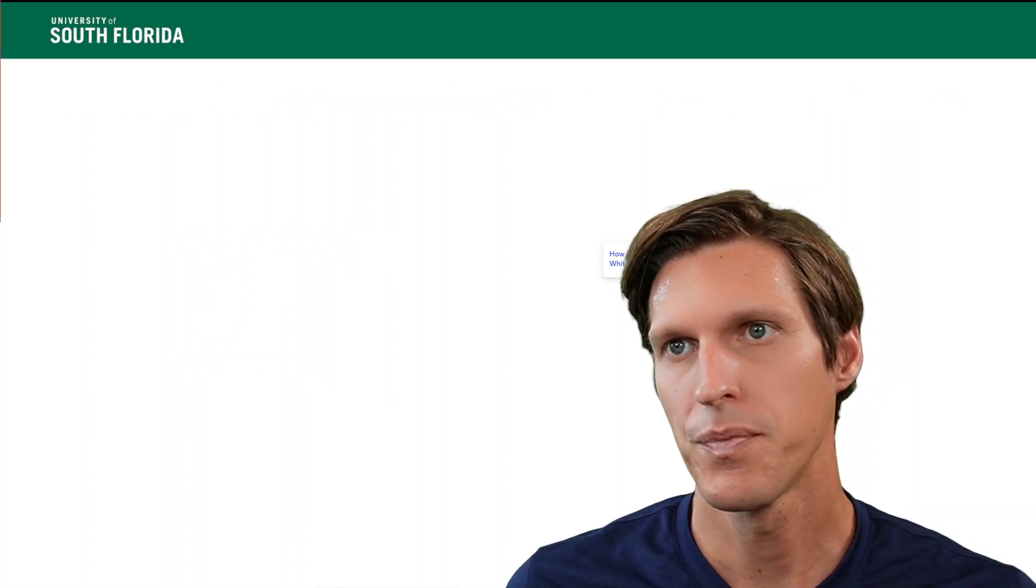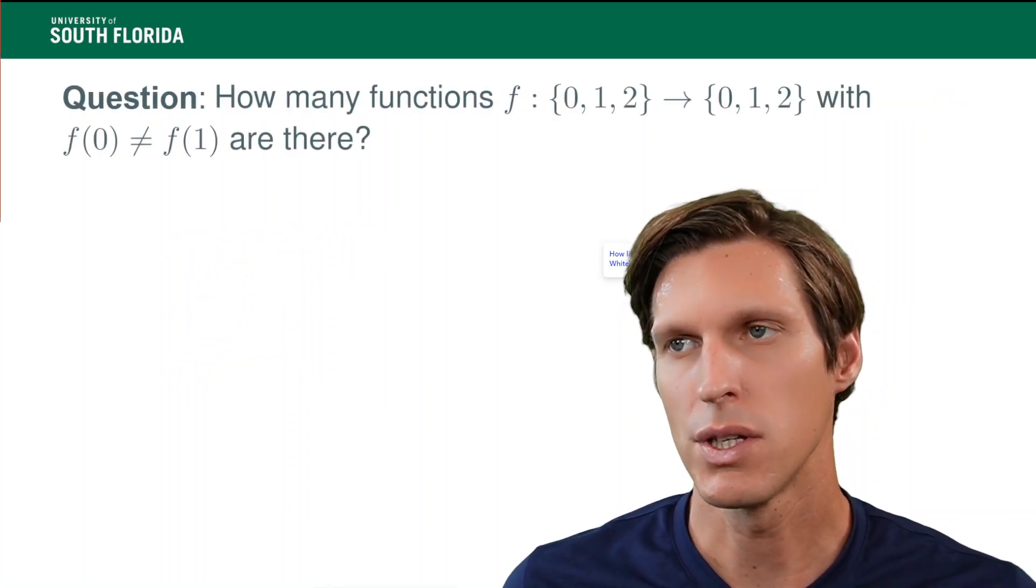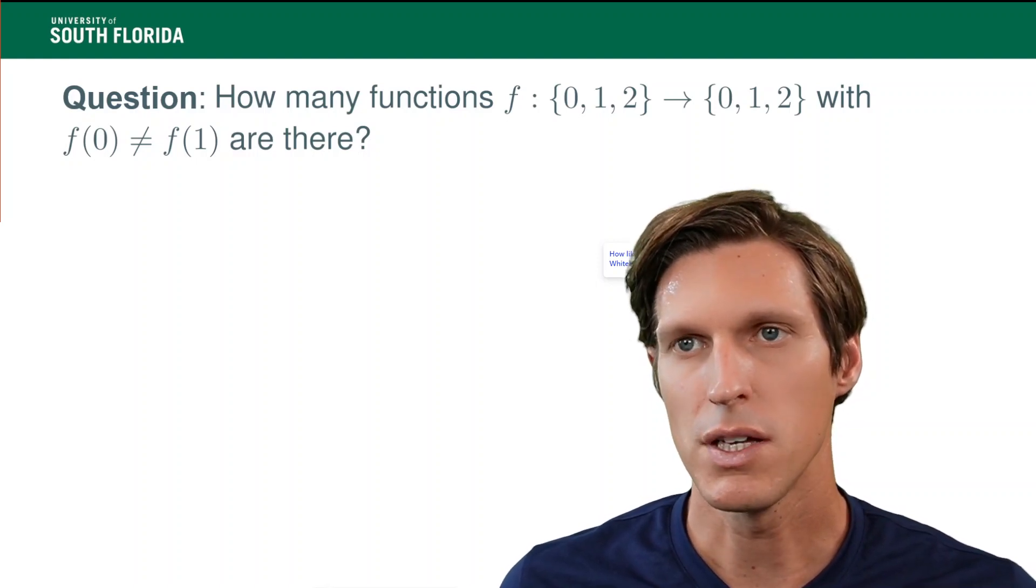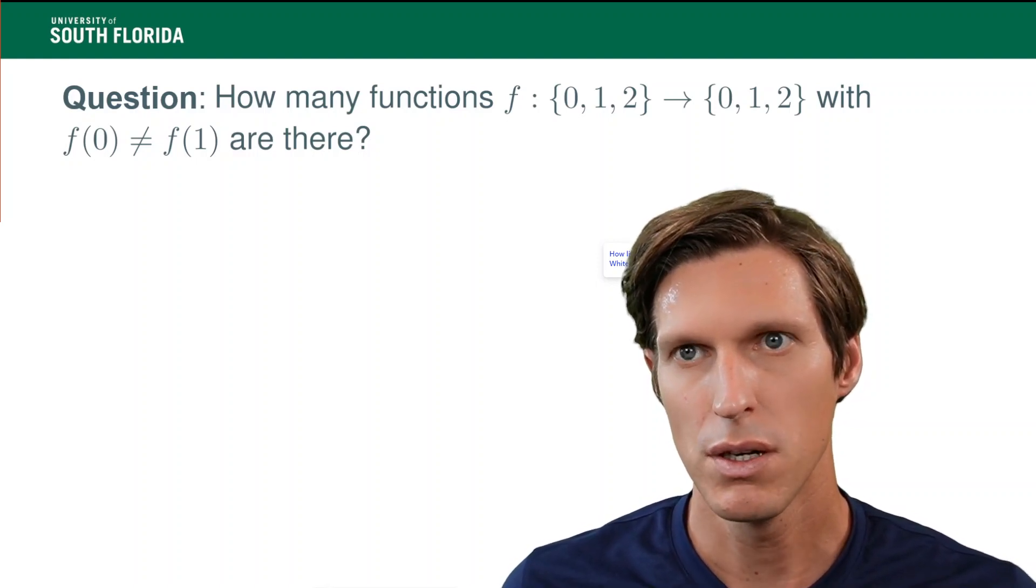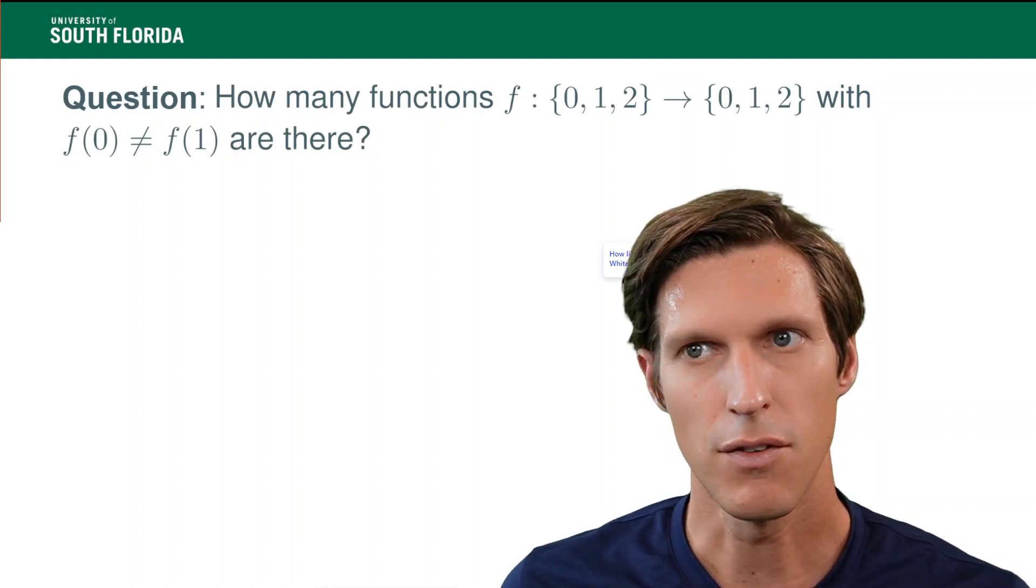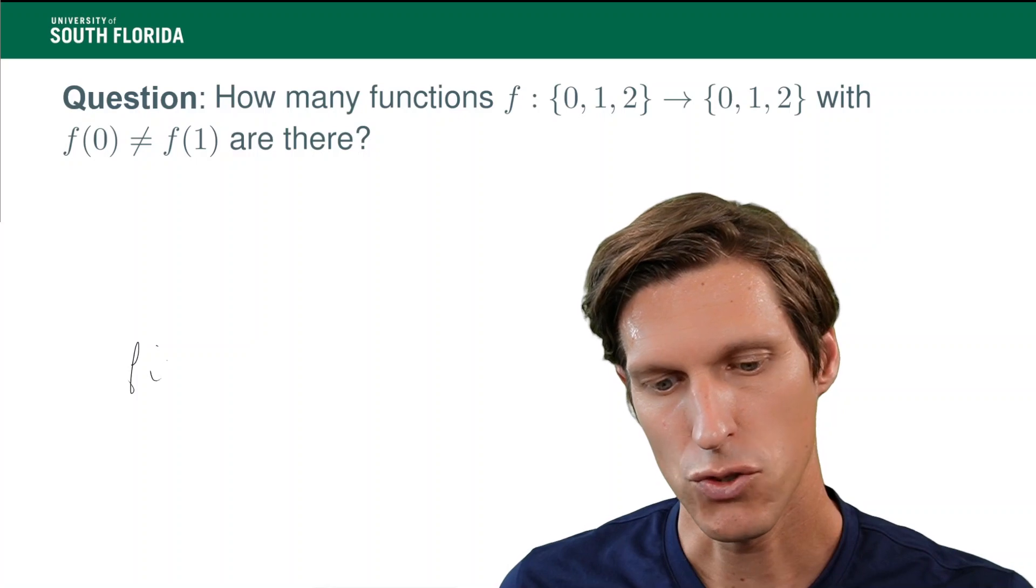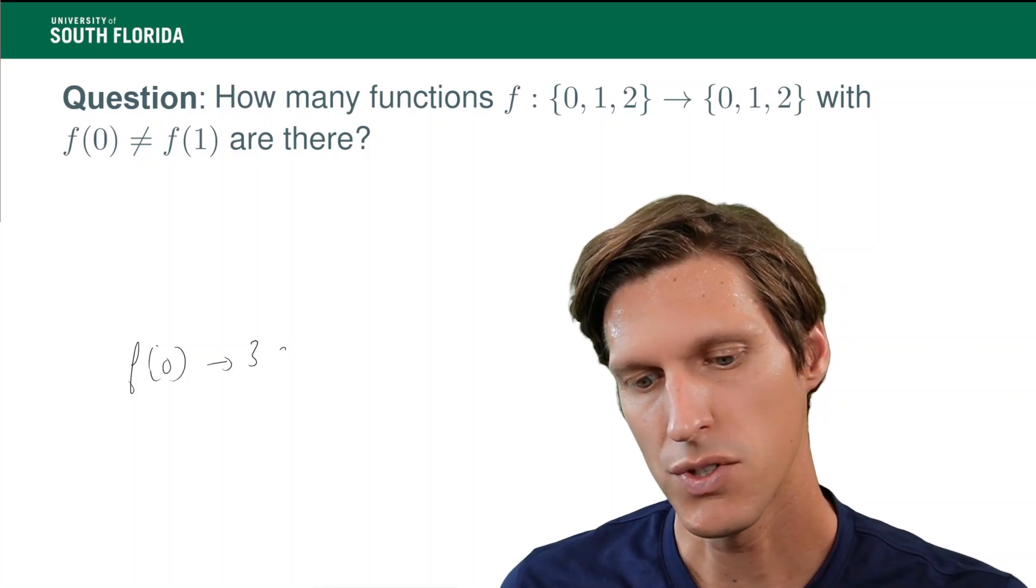So, now, another kind of question that we may ask is how many functions with a certain property? So, for example, here f of 0 being different than f of 1. So, f of 0, how many choices? I will have three choices.